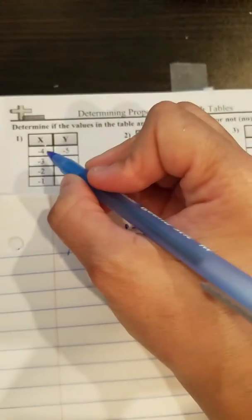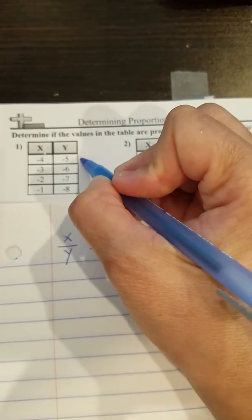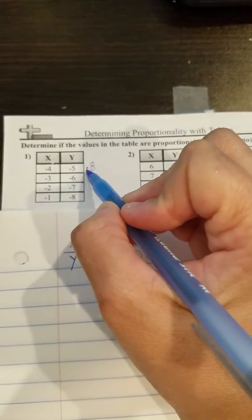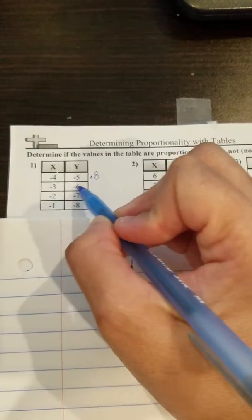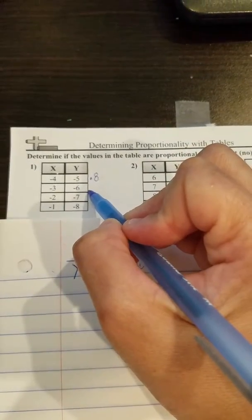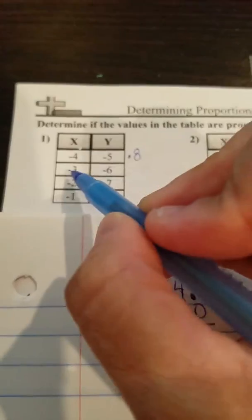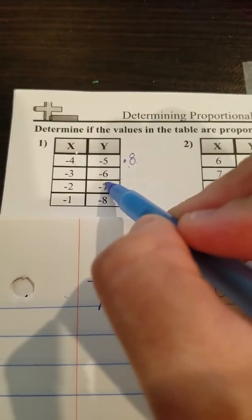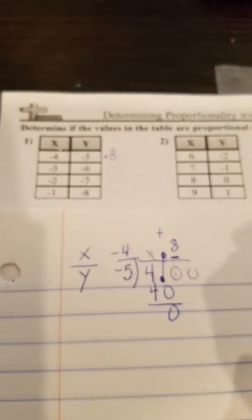So the relationship between 4 and 5 is 0.8. So basically negative 4 times 0.8 is going to give you negative 5. Well, let's see about this one if it's the same thing. Now, in order for this to be proportional, it should be the same. If you multiply 0.8 times 3, it should be negative 6. I could already tell you that I don't think it's going to be proportional. But let's see.